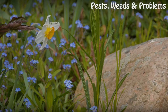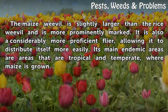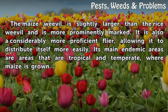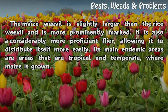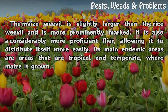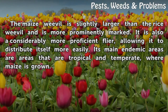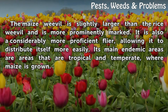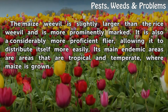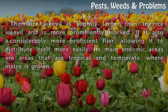Distribution. The maize weevil is slightly larger than the rice weevil and is more prominently marked. It is also a considerably more proficient flyer, allowing it to distribute itself more easily. Its main endemic areas are tropical and temperate areas where maize is grown.